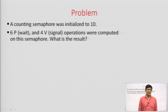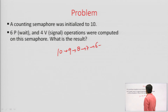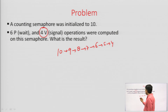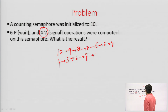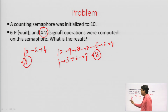Problem: A counting semaphore was initialized to 10. 6 P operations and 4 V operations were carried out. What is the final value? The P operation decrements: 10 → 9 → 8 → 7 → 6 → 5 → 4 (6 times). Then the V operation increments: 4 → 5 → 6 → 7 → 8 (4 times). So the final value of the semaphore is 8. Alternatively: 10 minus 6 plus 4 equals 8.